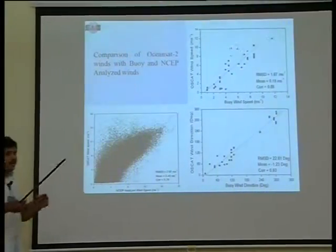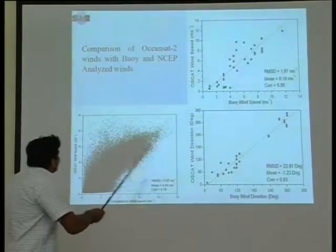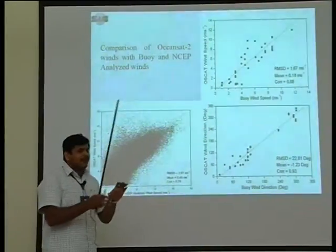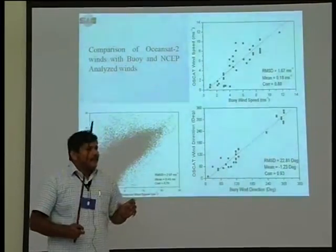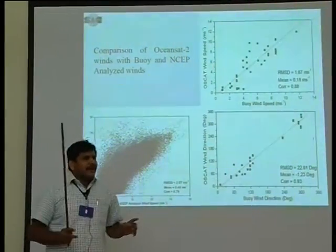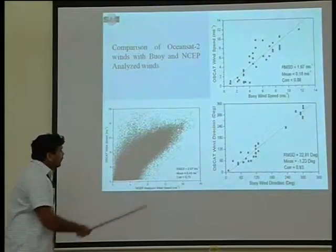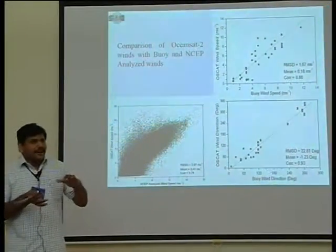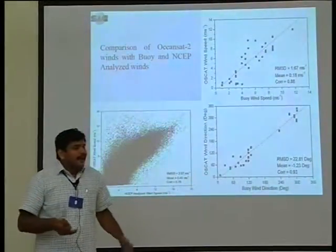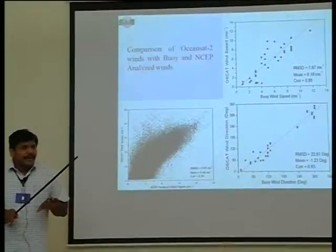Before assimilation, I want to confirm the quality of the data I am trying to assimilate. I check our scatterometer wind speed against NCEP reanalysis as well as available buoy observations during that period — approximately a two-day period. We have very few Rama buoys over the Indian Ocean. Comparing both observations with OSCAT wind speed gives our calibration error: 2 meters per second in wind speed and 20 degrees in wind direction, which is almost within the expected calibration error in both cases.